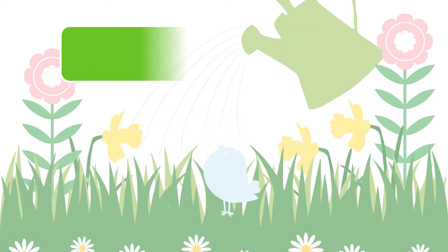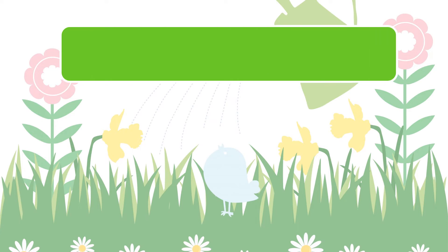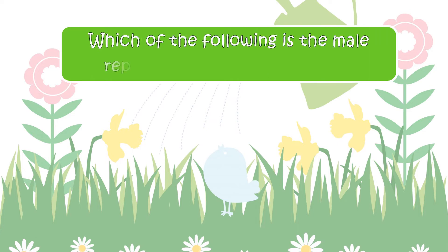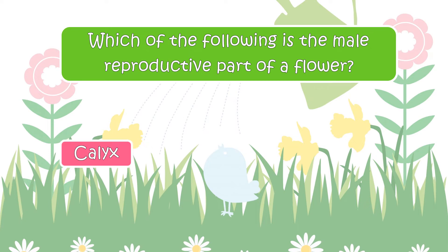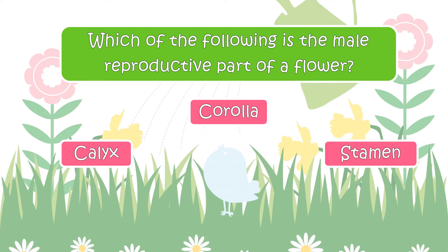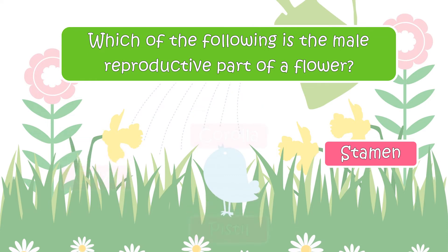Here is the next question. Which of the following is the male reproductive part of a flower? Your options are Calyx, Corolla, Stamen, or Pistil. The correct answer is Stamen.